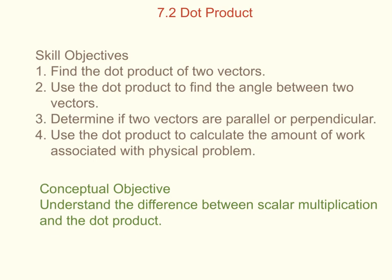Hello everyone and welcome to the video on section 7.2 on the dot product. Our skill objectives for this video are: one, find the dot product between two vectors; two, use the dot product to find the angle between two vectors; three, determine if two vectors are parallel or perpendicular; and four, use the dot product to calculate the amount of work associated with a physical problem. The conceptual objective is to understand the difference between scalar multiplication and the dot product.